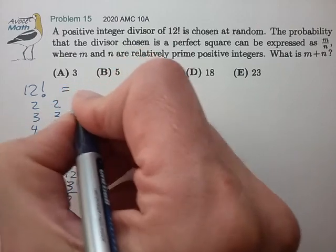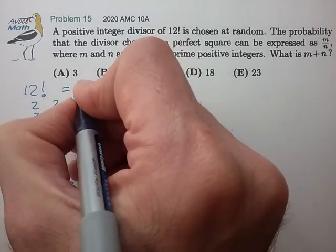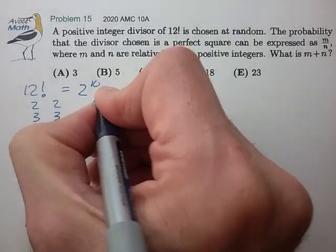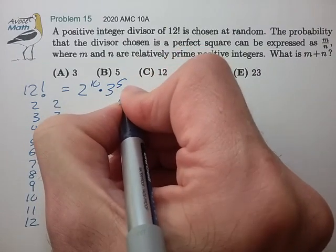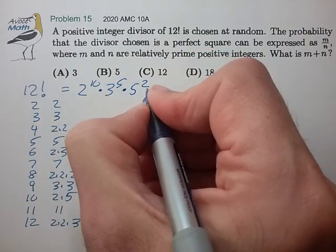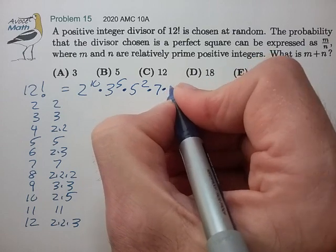So 12 factorial is we got 10 2s, 5 3s, 2 5s, 7, and an 11.